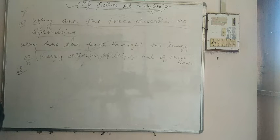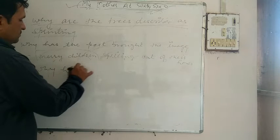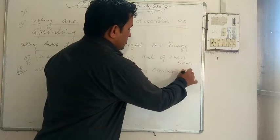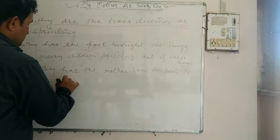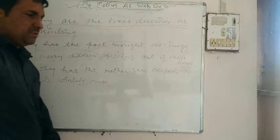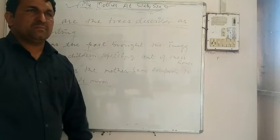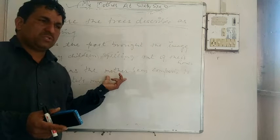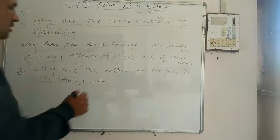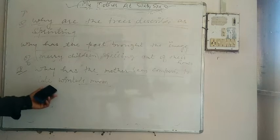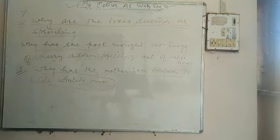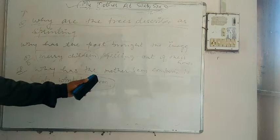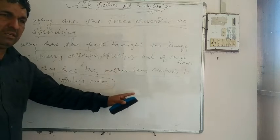Why has the mother been compared to a late winter's moon? The face of the mother is dull, obscure, and edgy — it has lost its charm and beauty. In the same manner, in late winter, the moon also becomes edgy, obscure, and loses its brightness. So there is a very apt comparison between the poetess's mother and the moon, with many similarities between the two.